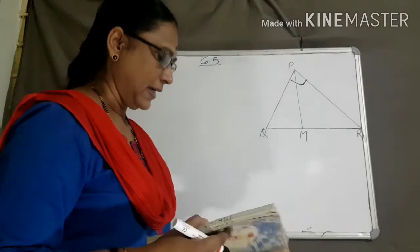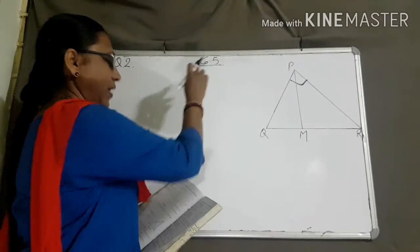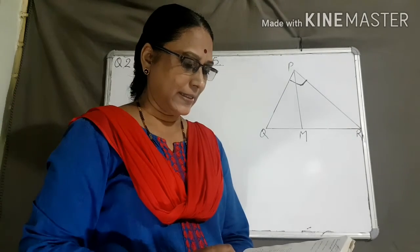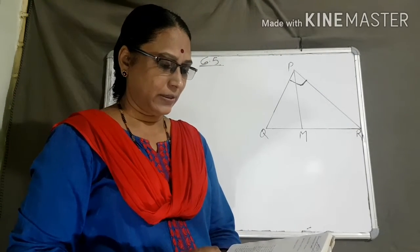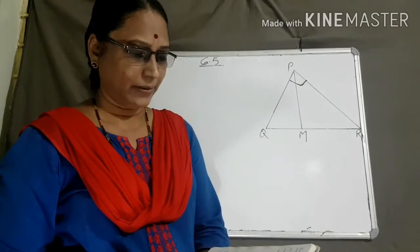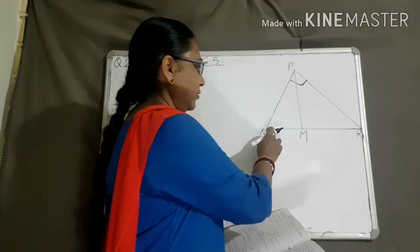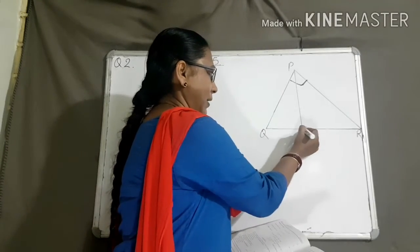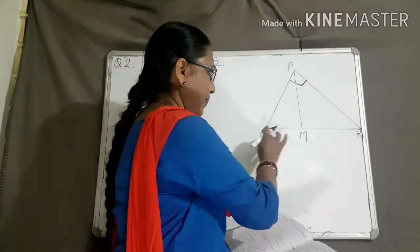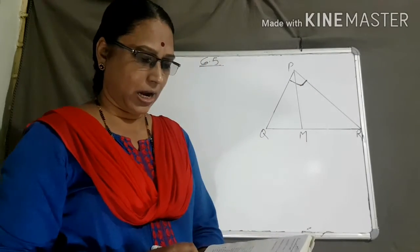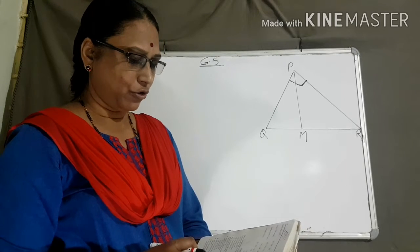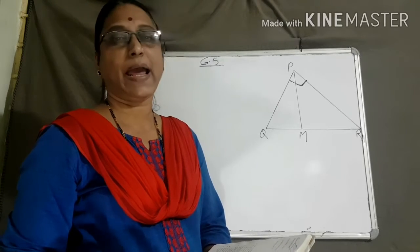Hello students. Exercise 6.5, question number 2. PQR is a triangle right-angled at P, and M is a point on QR such that PM is perpendicular to QR. Show that PM square equals QM into MR.